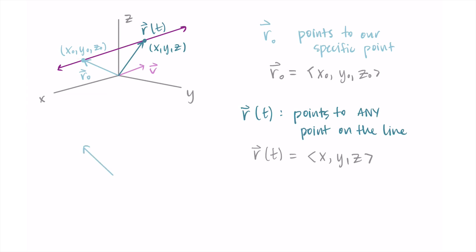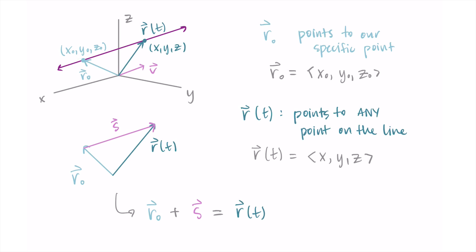Looking at r-naught and r as our two vectors, there's a third vector that goes between the tips of these two, which lies along our line — we call it s. You can see that r-naught plus s equals r of t. By putting these together in this addition formula, we're getting information about our line. This vector s lies on the line, which is good — we're finally getting information about the line. But we'll need more information: what exactly is this s vector?